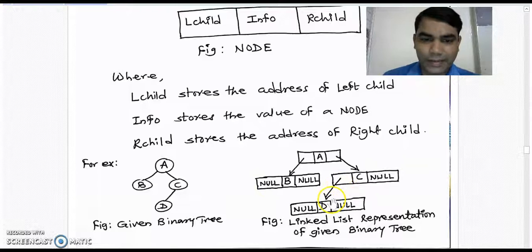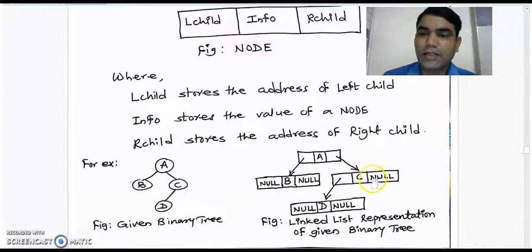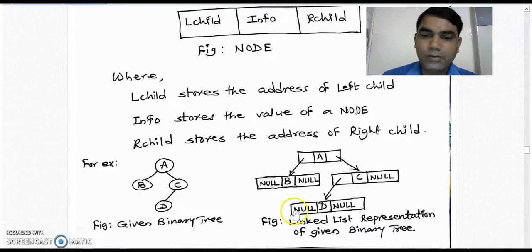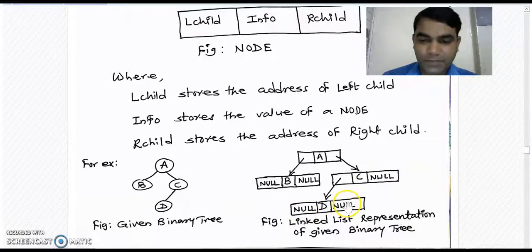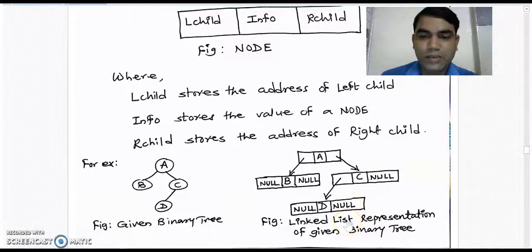Here C has only left child but there is no right child. So the right child is represented by null. D does not have any left or right child. That is why it is represented by null in this part. So this is the linked list representation of the given binary tree.